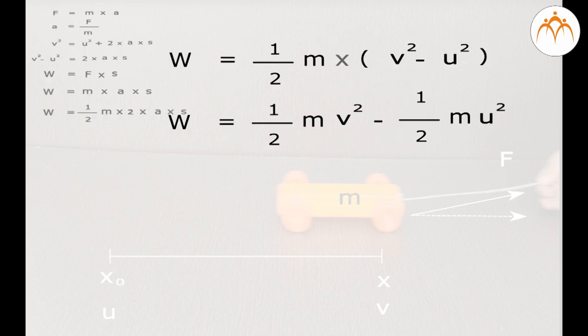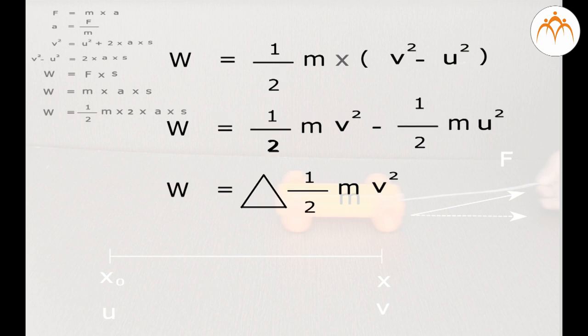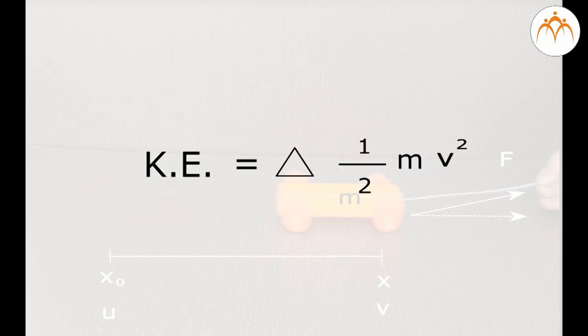So now we have total work done equals a half mv squared minus a half mu squared. This is the change in the quantity half mv squared. That is such an important result that we give the quantity a name. We call that quantity the kinetic energy. Kinetic energy is defined as 1 half mv squared.